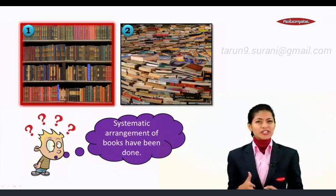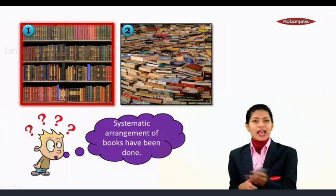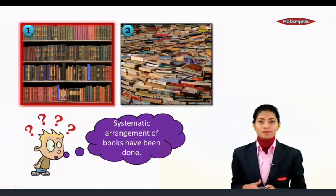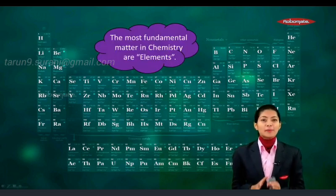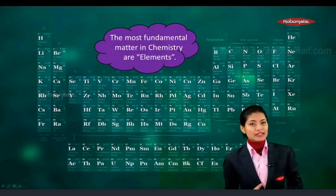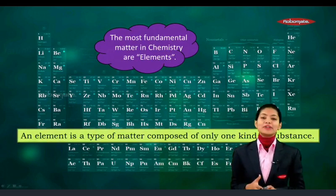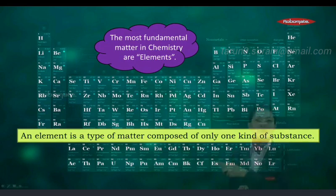You might be wondering how I am relating systematic arrangement to chemistry. The reason will be unfolded shortly. In chemistry, the most fundamental matter is known as the element. An element is defined as a type of matter which is composed of only one kind of substance. Now let us see how systematic arrangement and elements are related.